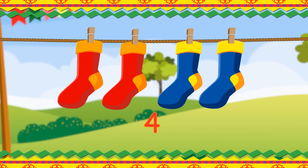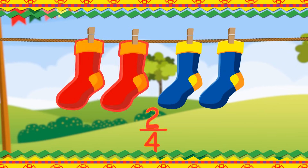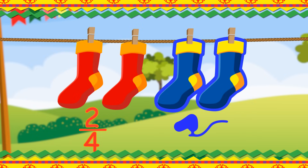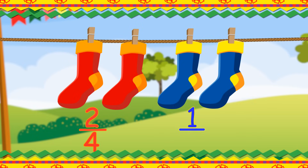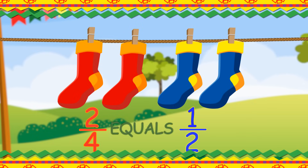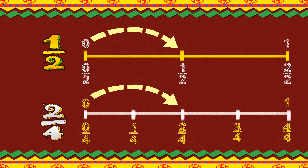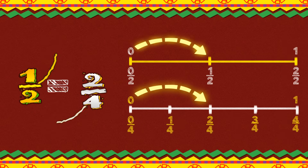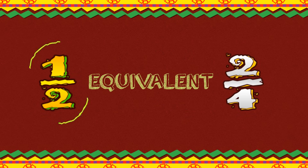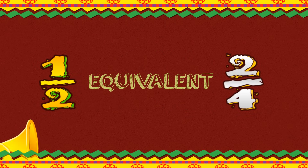If there were four socks to wear, then we would say there'd be two in each pair. And one of the two pairs, we can declare equals two-fourths of all the socks there. Drawing one-half and two-fourths on a number line shows they can be described with an equal sign. An equal value is what they're worth, so we say one-half is equivalent to two-fourths.